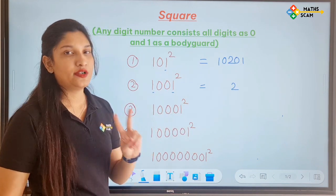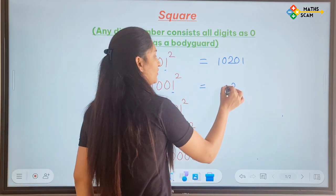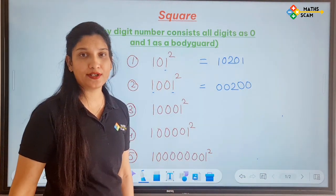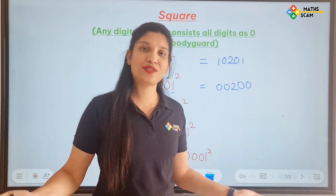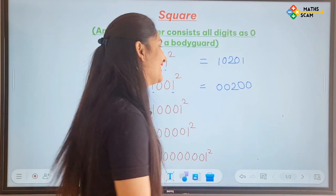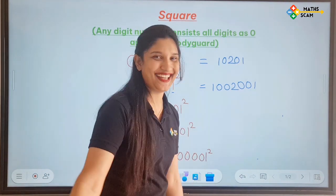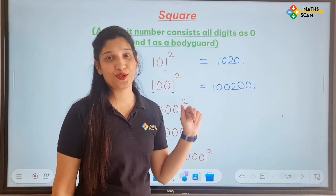Now how many 0's here? 2 0's. Write down 2 0's before 2 and after 2. Before 2, after 2, and then what comes after? Bodyguard. That's the answer of this question.